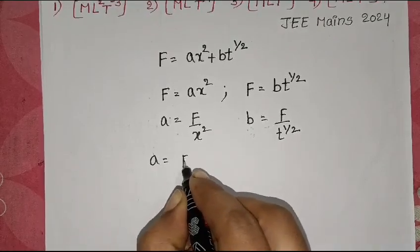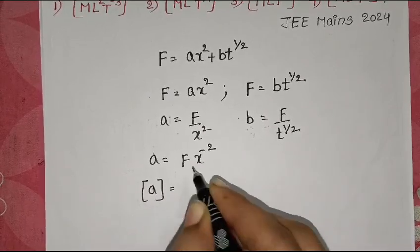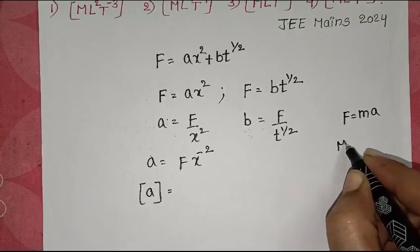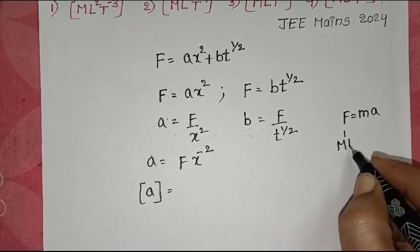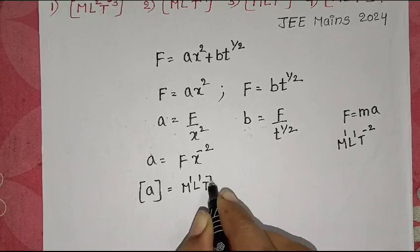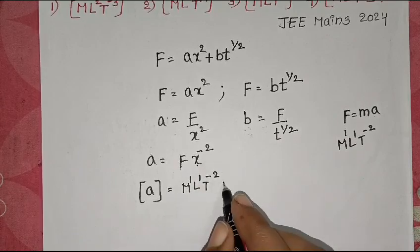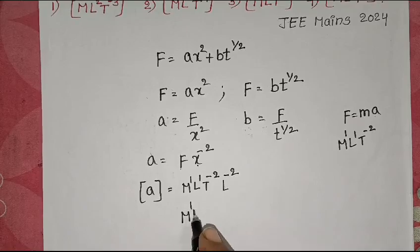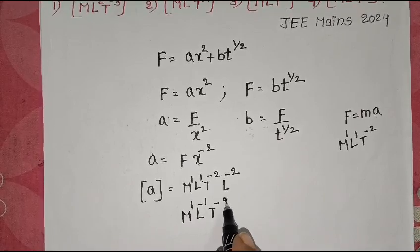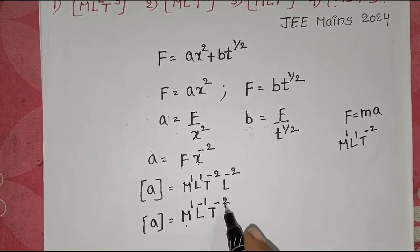So A = F · X⁻². Dimensions of A equal dimensions of force. Force equals mass into acceleration, with dimensions M¹L¹T⁻². Since X is displacement with power minus 2, we multiply by L⁻². So dimensions of A = M¹ · L^(1-2) · T⁻² = M¹L⁻¹T⁻².